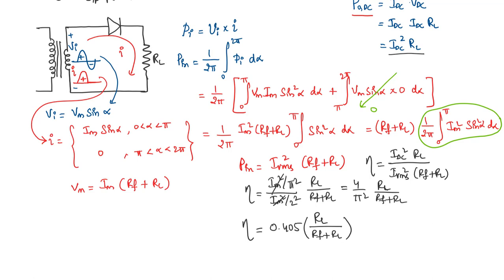So this value would be equal to 4 by π square is 0.405 times R_L over R_f plus R_L. So the maximum efficiency that we can see, assuming even R_f is negligible compared to R_L, then the maximum efficiency we see would be 40.5%. So in terms of percentages, maximum efficiency that we can have in half wave rectifier is η_max in terms of percentages would be 40.5%.